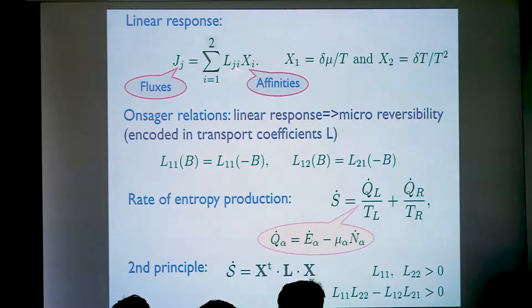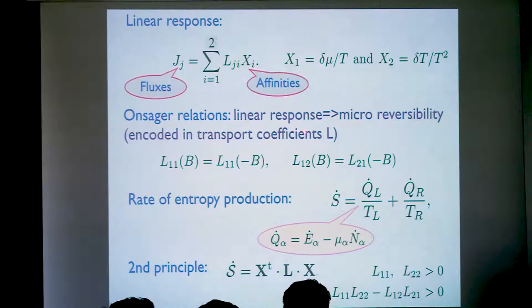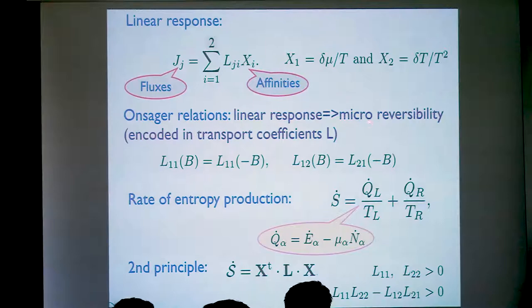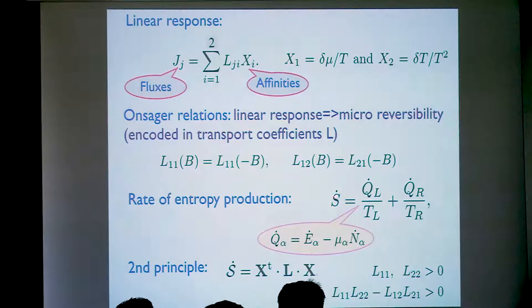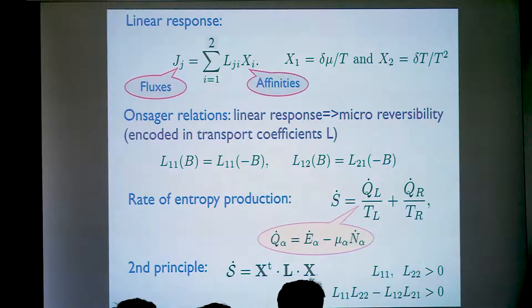Since this relation is linear, all these coefficients are related to susceptibilities or response functions evaluated in the equilibrium system. For this reason they obey micro-reversibility, and for this reason they fulfill the Onsager relations. The flow of these quantities — charge and energy — and all this description must be in agreement with the second law of thermodynamics. This is expressed by the fact that the rate of entropy production in this process should equal the rate of heat generation in the left reservoir divided by its temperature plus the same for the right reservoir.